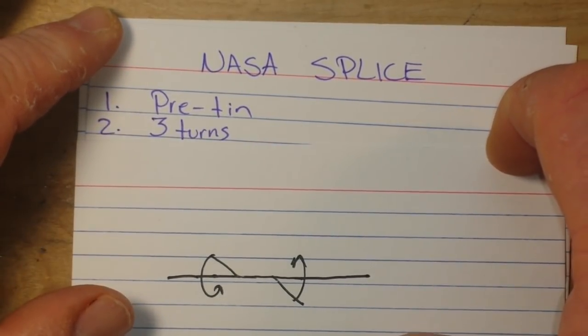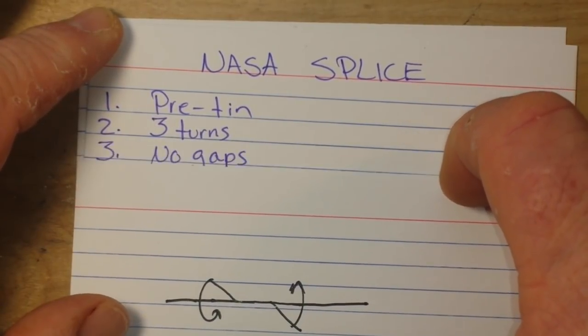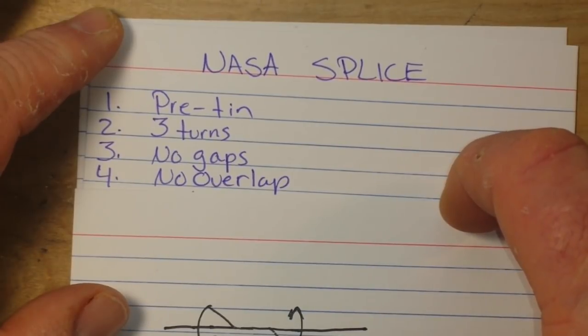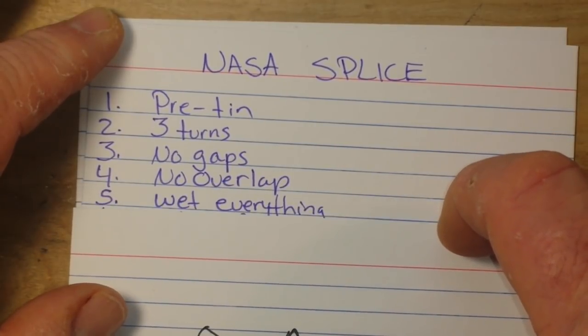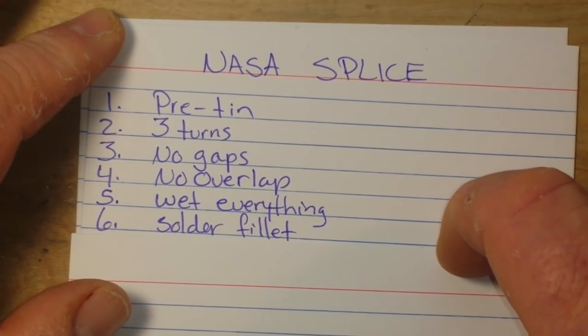Number one: our connections must be pre-tinned. Number two: there must be three turns of wire. Number three: no gaps. Number four: no overlap. Number five: everything must be wet with solder. And number six: a solder fillet must cover the entire joint.